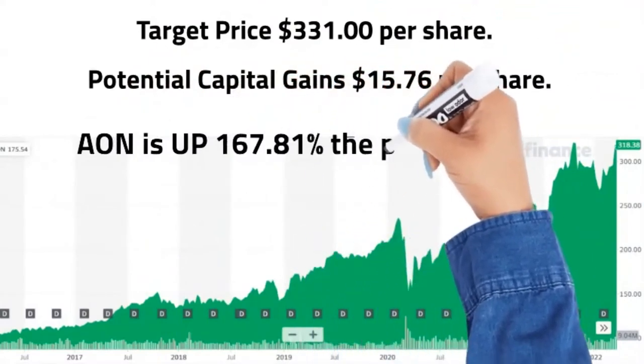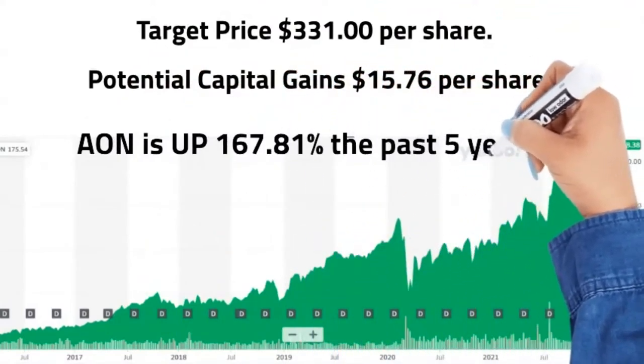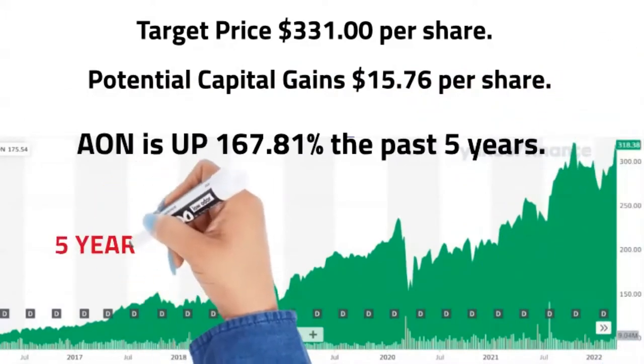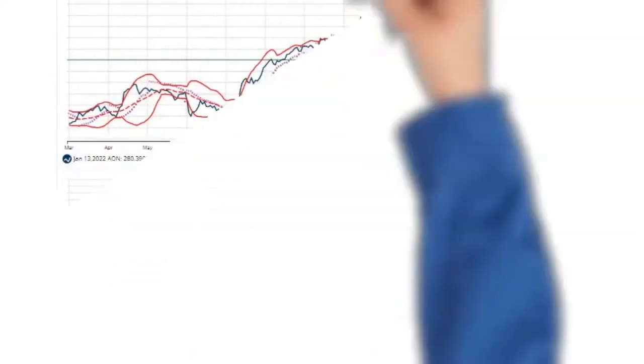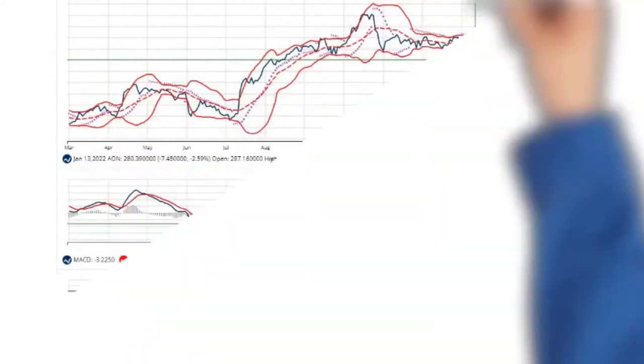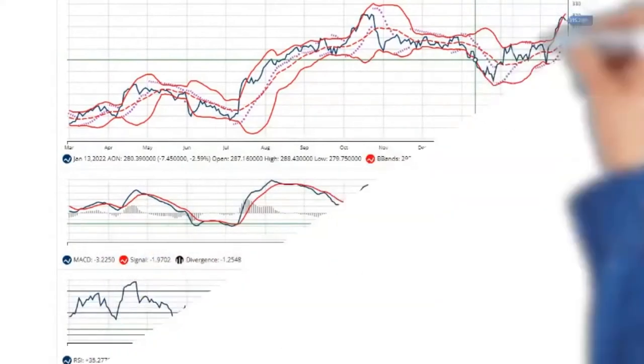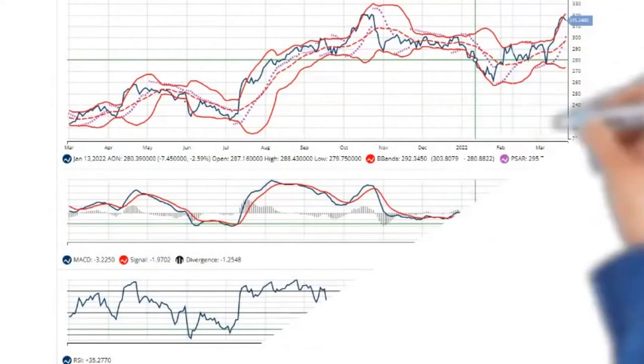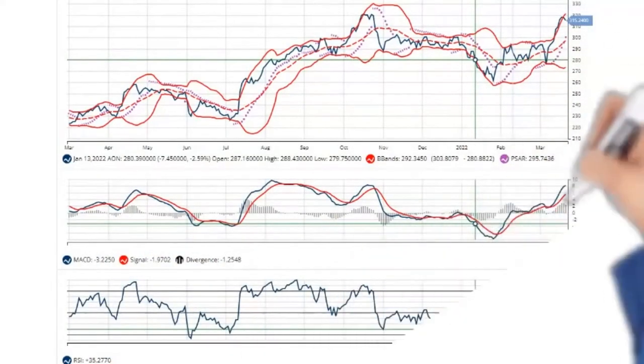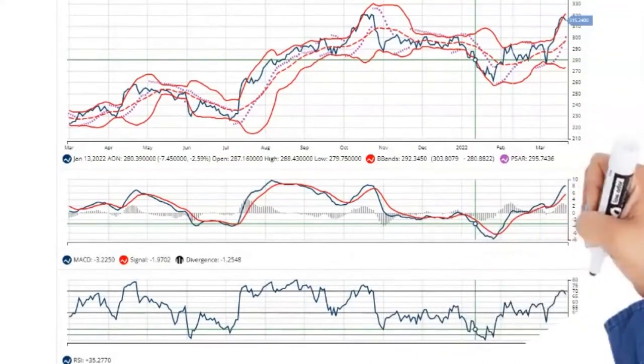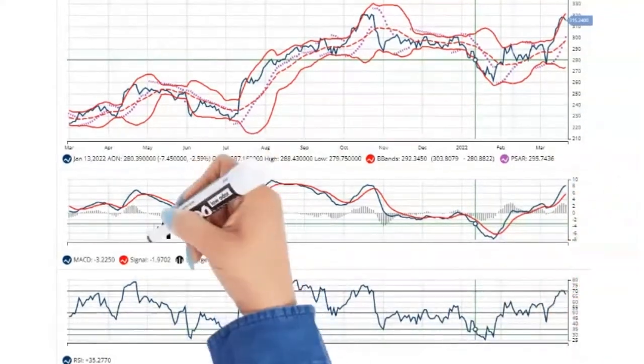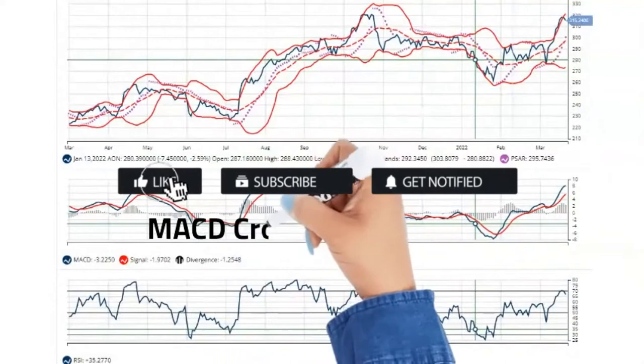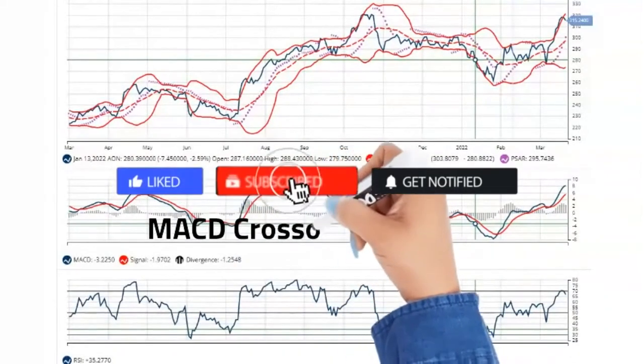Aon is up 167.81% the past 5 years. The long-term trend has been up since March 15, 2022 at $303.92 per share. The intermediate-term trend has been up since February 4, 2022, at $290.94 and the short-term trend has been down since March 22, 2022, at $308.47 per share.